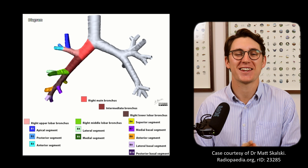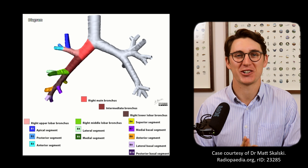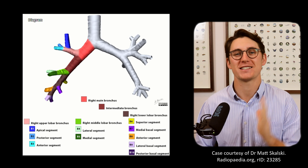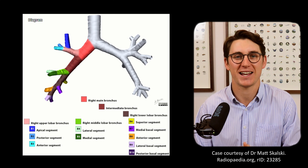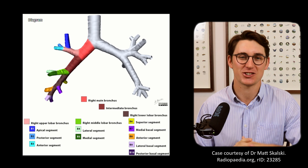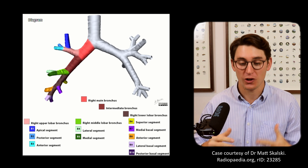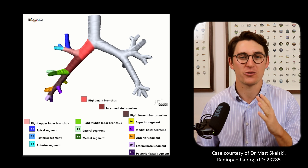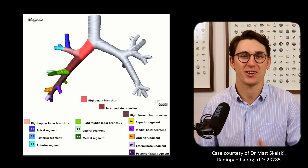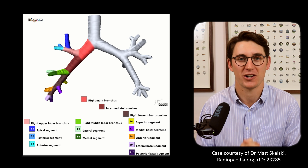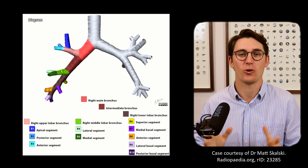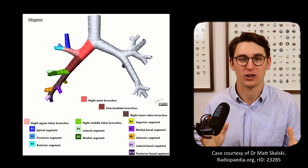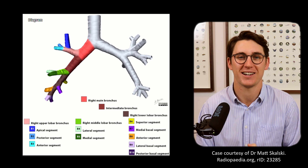Hello everybody and welcome back to another anatomy tutorial. Today we're going to be covering the lobar and segmental anatomy of the lungs on a CT scan. We're going to follow the bronchopulmonary tree through the first, second and third order bronchi. I'm going to show you where they course, how to name them, and how they branch off within the lungs.